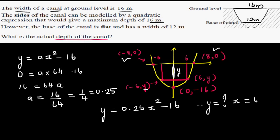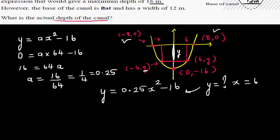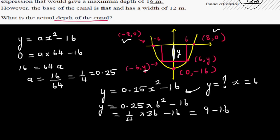So let us substitute in this equation. This will become y is equal to 0.25 times x squared, which is 6 squared minus 16. So this is a quarter of 36 minus 16. So quarter of 36 is 9 minus 16 is minus 7.